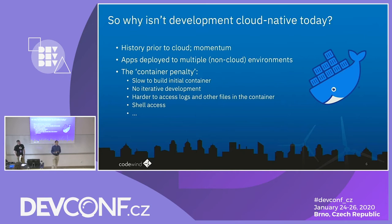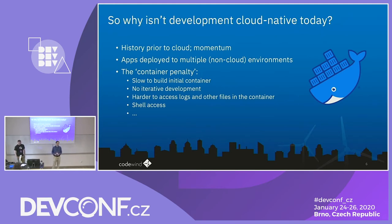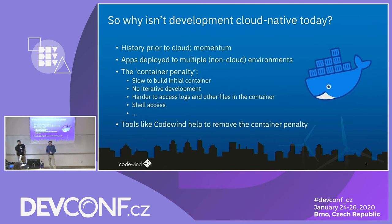Even accessing log files is challenging in a container environment — you can get logs from container output on Kubernetes, but servers often produce more than just container output. You may have other server logs and error logs that require you to shell into the container to find. So even something as simple as accessing logs is more difficult in a container environment. The goal of Codewind is to help reduce those friction points when doing application development on containers.